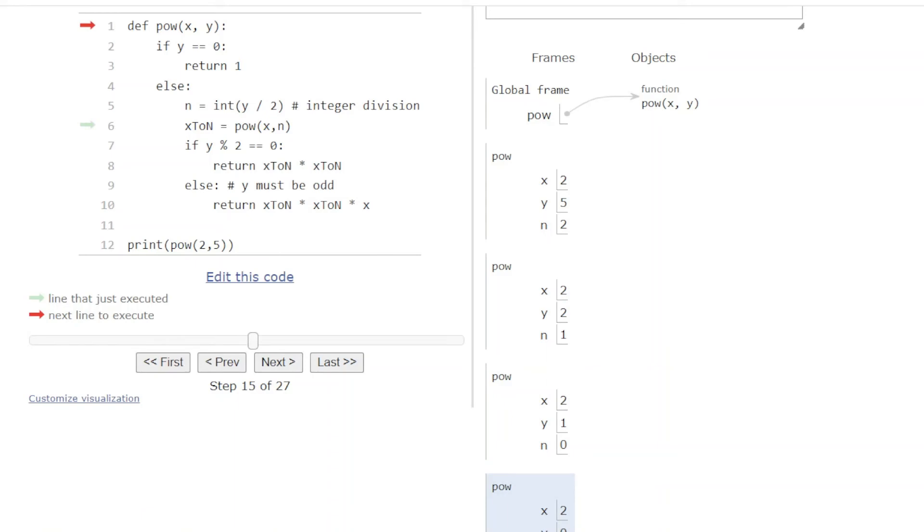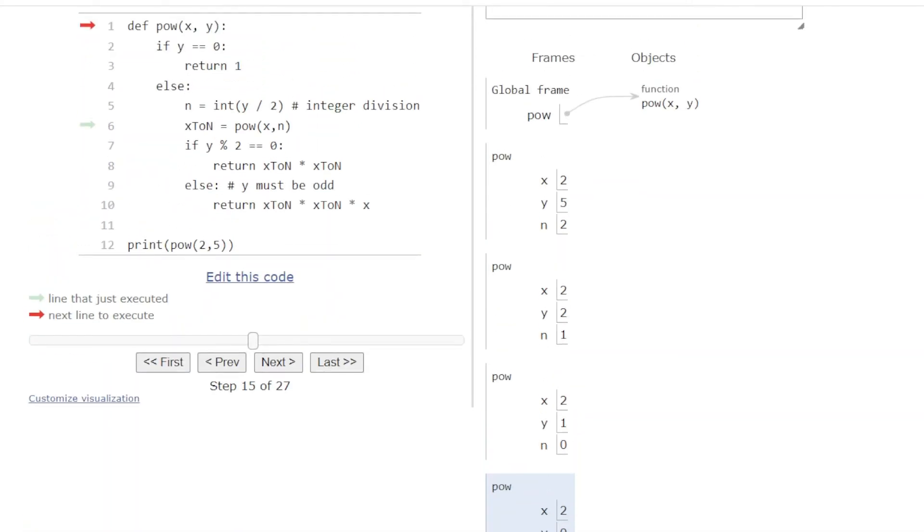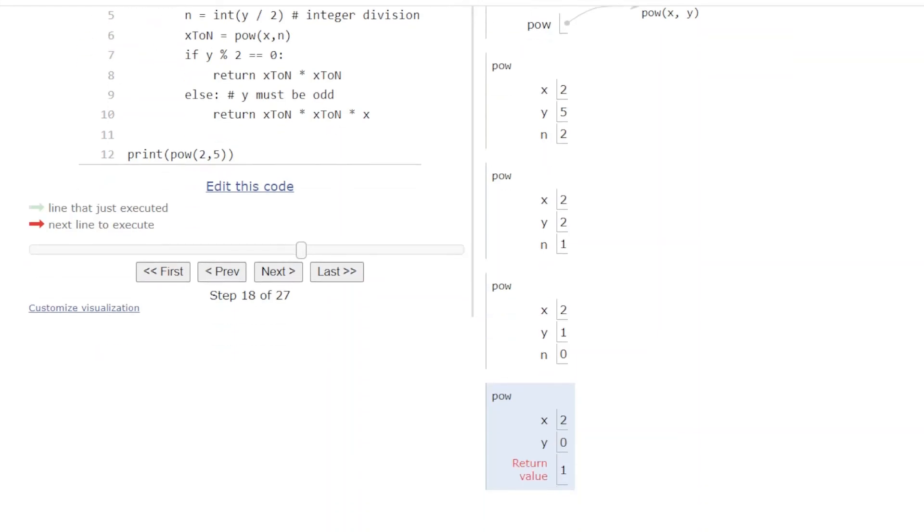And so we're going to have to make the recursive call, but on this call, the parameter values are 2 and 0. And so we'll see that when we step through the code up here, we'll check if y equals 0, and that will be true. So we'll check that. Because that is true, we'll return 1. And that gets added to the frame here. Let me scroll down so you can see it. There's now a return value of 1. So this frame or activation record is about to be deleted, but the return value will be passed back to the caller.